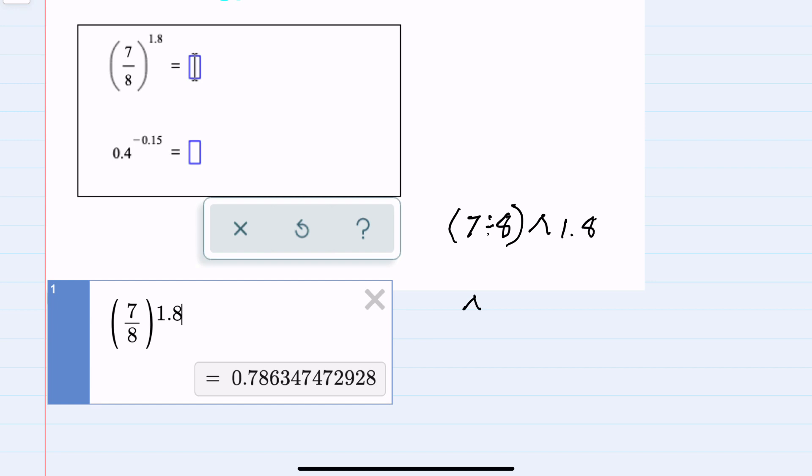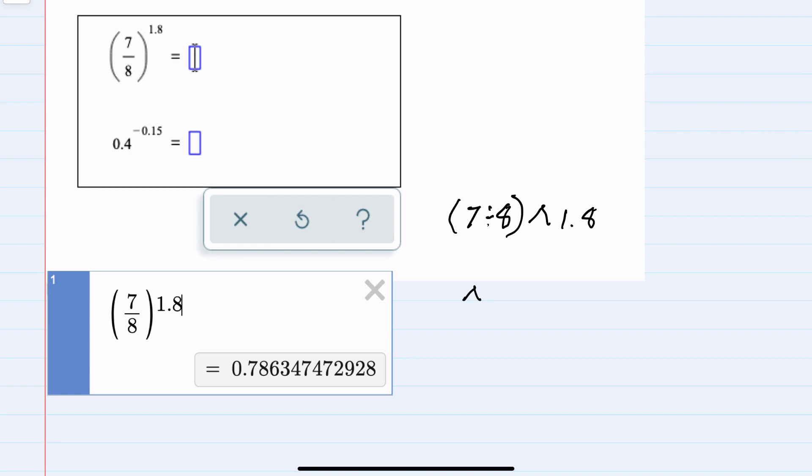And since we are rounding here to the nearest thousandths, that would be three decimal places after the zero. So tens, hundreds, thousandths. The digit after the six is a three, so we would not round up. This would be our rounded solution for the first expression.